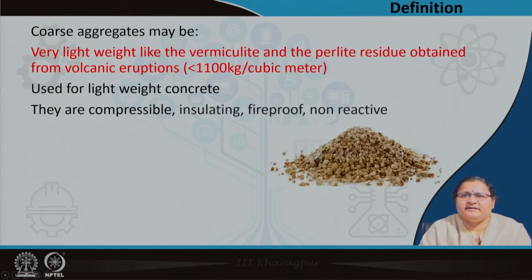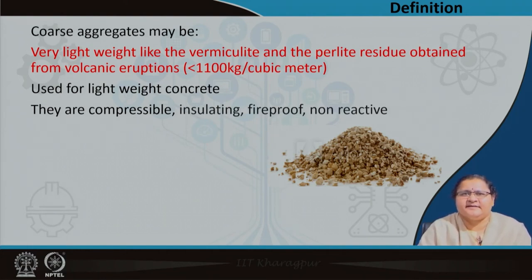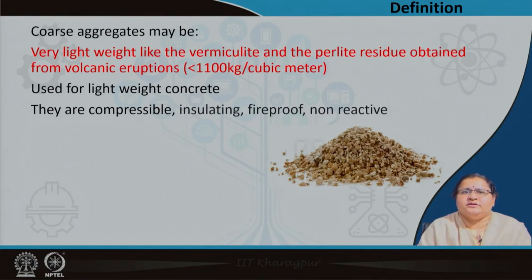Apart from stones, we have some other sources too. Vermiculites and perlites, which are obtained from volcanic glass, are quite light in weight — less than 1100 kg per cubic meter — so they will give you lightweight concrete. These items are compressible, insulators, fireproof, non-combustible, and non-reactive. They are chosen when inert lightweight materials are needed, and are used when lightweight concrete is required.